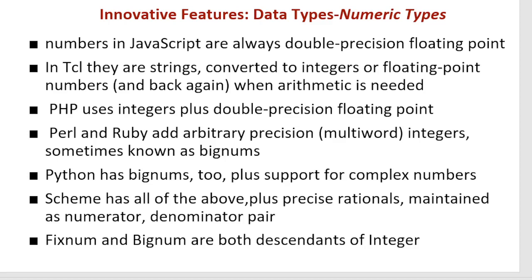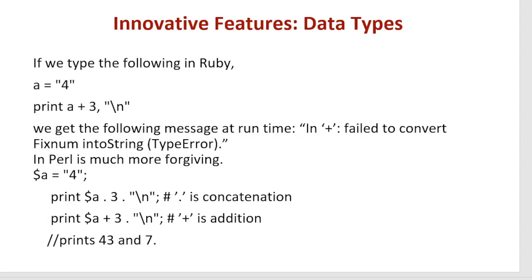Scheme also maintains precise rationals as numerator-denominator pairs. For example, in Ruby, if you assign the string '4' to a variable and then try to print that variable plus 3, you will get an error: 'failed to convert fixnum into string'. Ruby strictly requires data type specification.